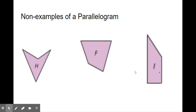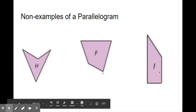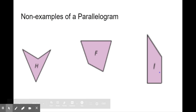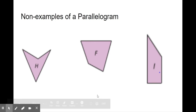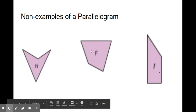Some non-examples of parallelograms: if you look here, if this side continued and this side continued, eventually they would meet. So if we started at the top, this would go on and eventually cross with the other side — so that means they're not parallel. Again, with this side and its opposite side, if they continue down in that direction, eventually they're going to cross one another.